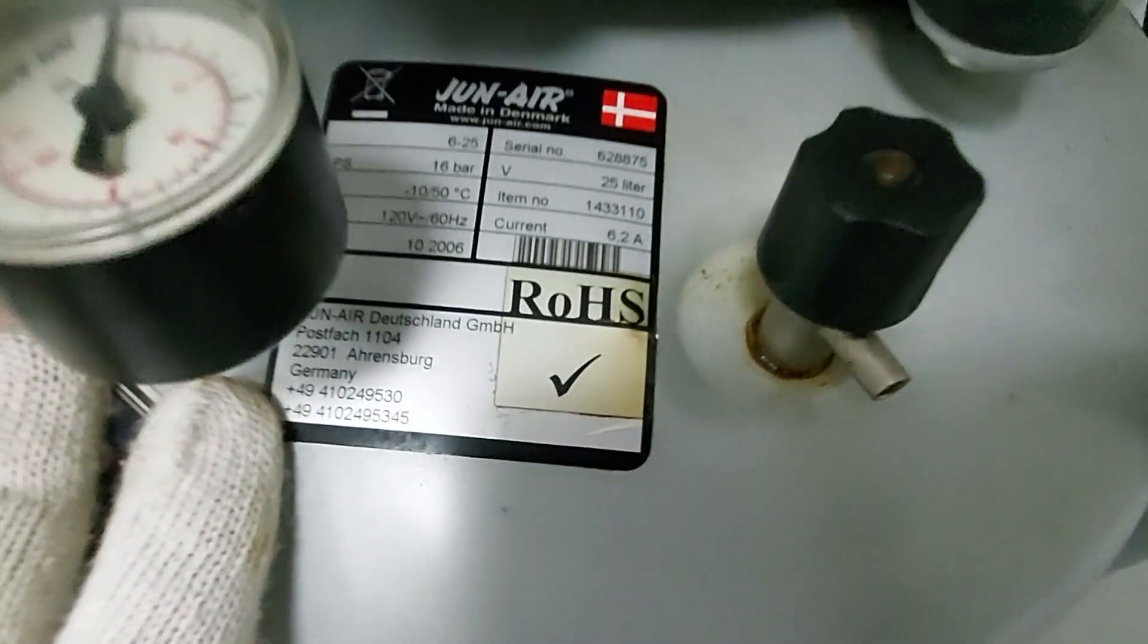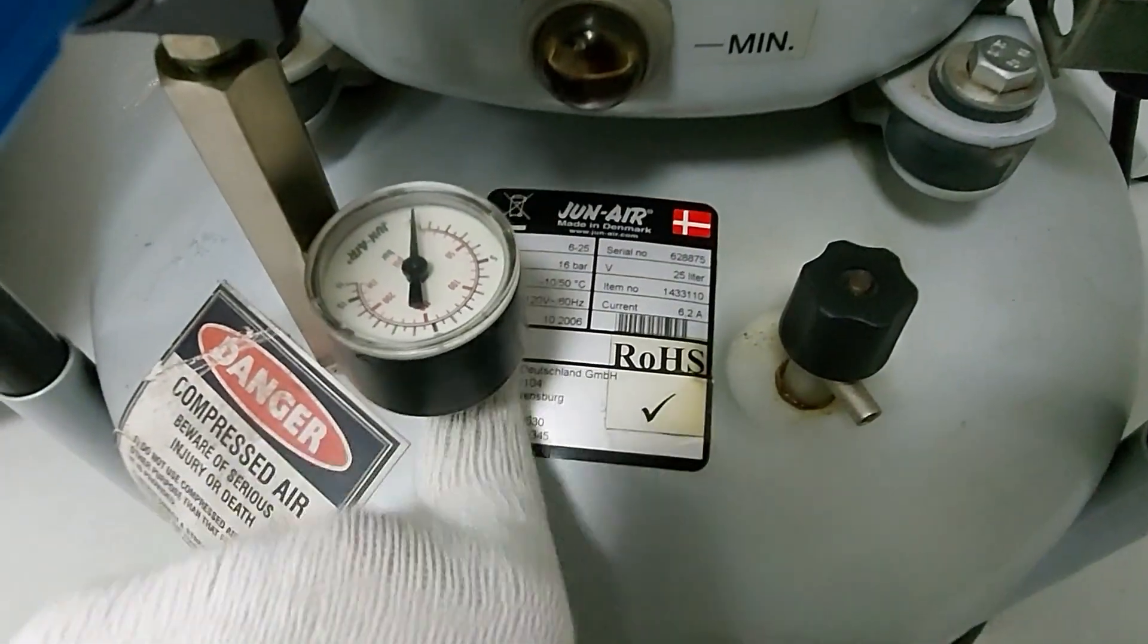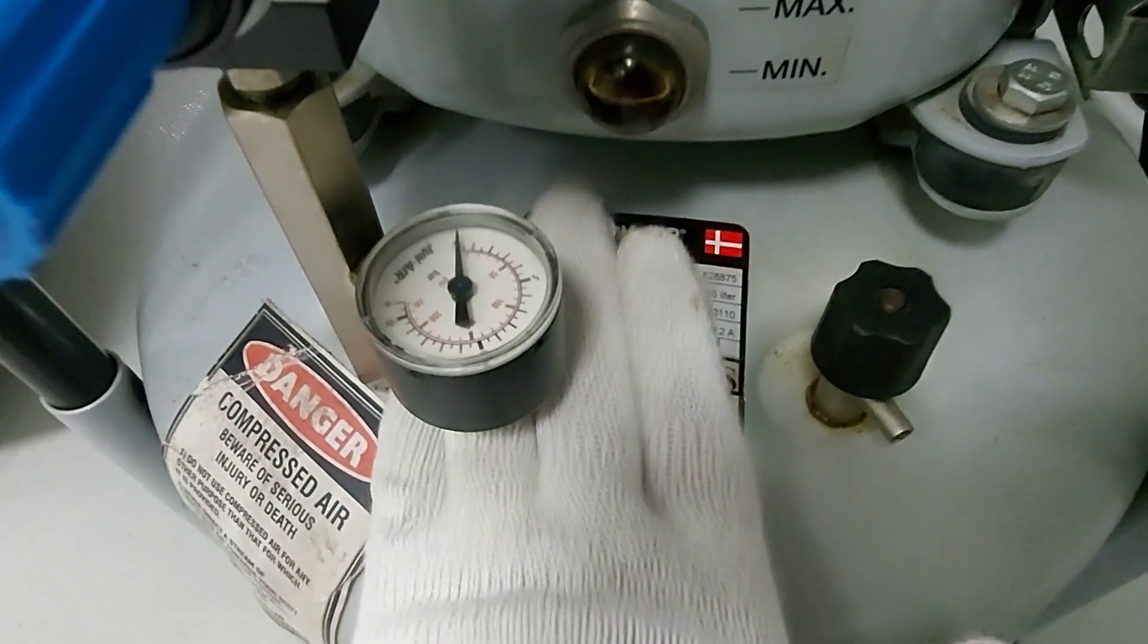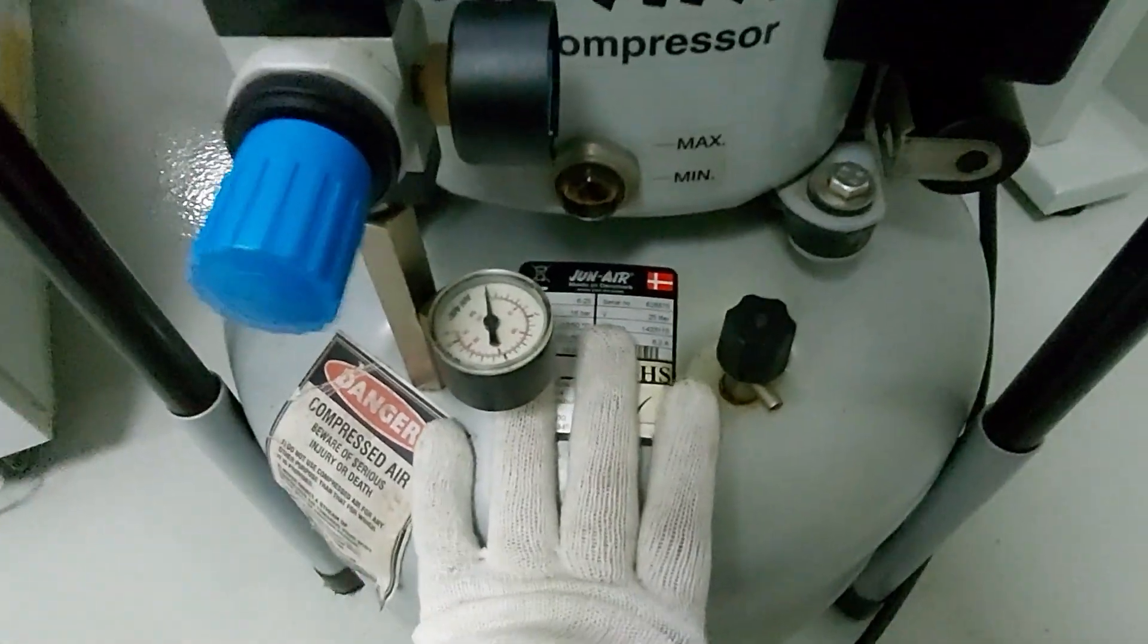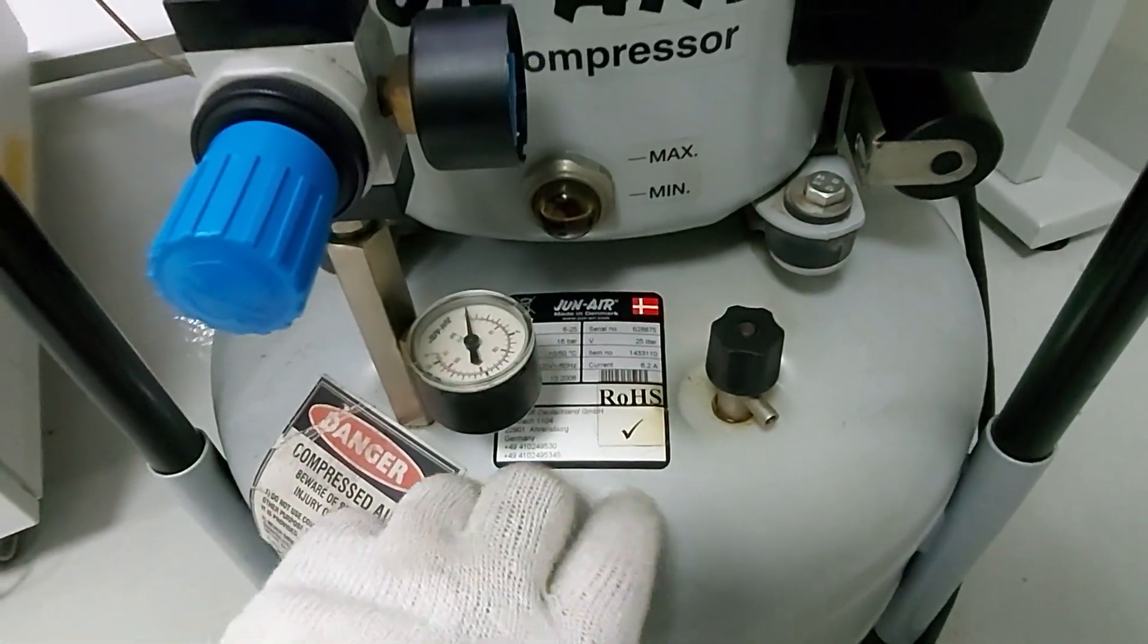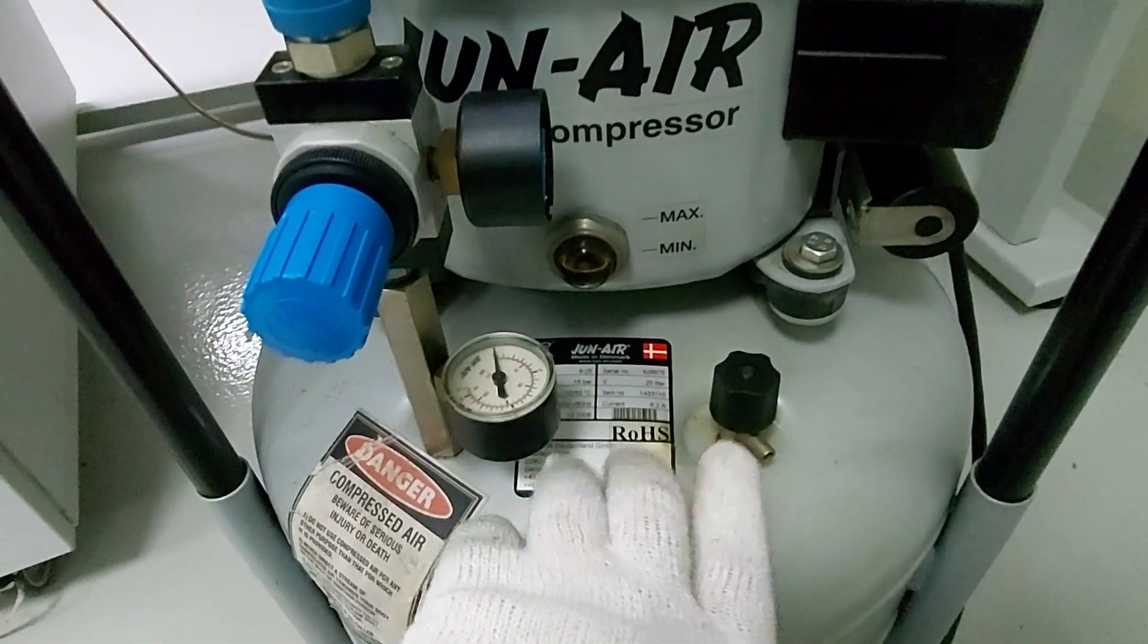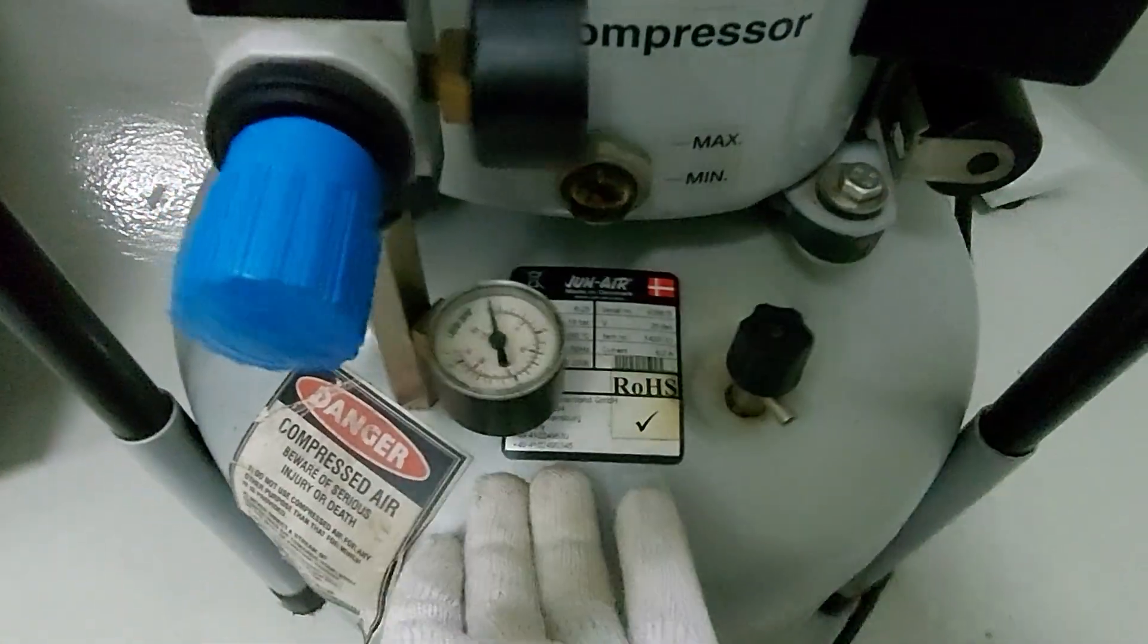You can see it here. Basically a nameplate is where you get the complete details about this compressor. Which company produced it, when they manufactured it, what is the serial number, what is the model number, what are the specific safety aspects or specifications of this compressor. So first thing in safety, you should always read the nameplate. The nameplate will help you to use this compressor safely.